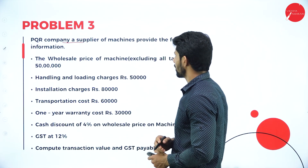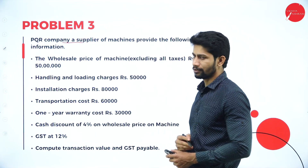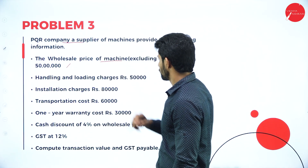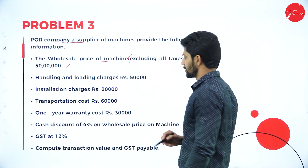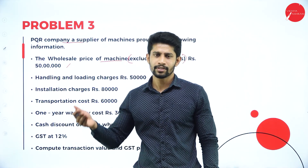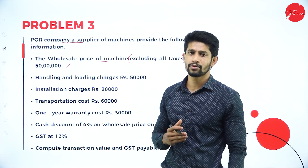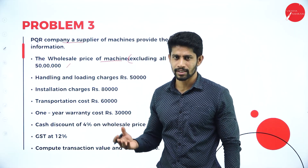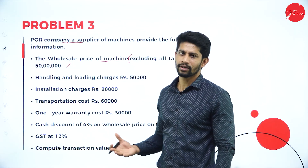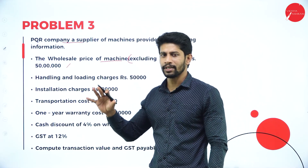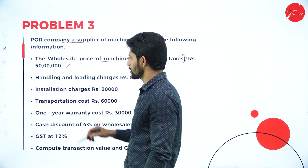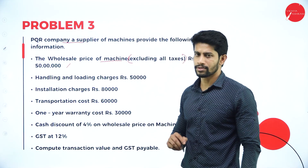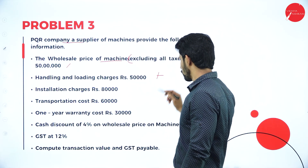Problem number 3: PQR Company, as supplier of machines, provided the following information. The wholesale price of the machine is Rs. 50 lakhs, excluding all taxes — meaning no GST is included. If GST were included, you would need to exclude it, since you are computing the value of supply to impose GST. The wholesale price is Rs. 50 lakhs, and handling and loading charges are Rs. 50,000, which is also an expenditure you will add.